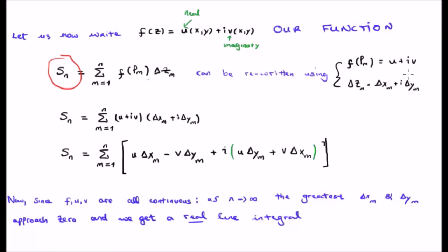Delta z, of course, is nothing else other than delta x sub m plus i times delta y sub m. If we put that into our expression s sub n, we can rearrange for the real and the imaginary components separately. This I have done here.